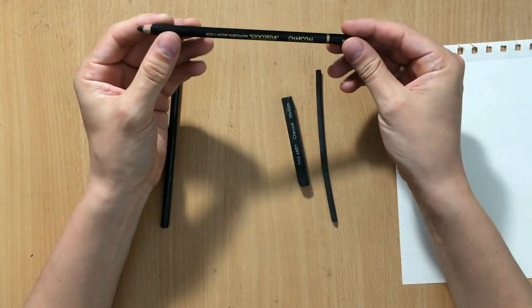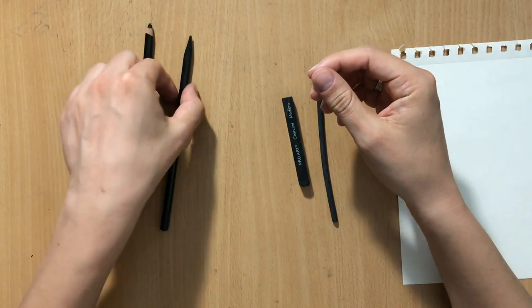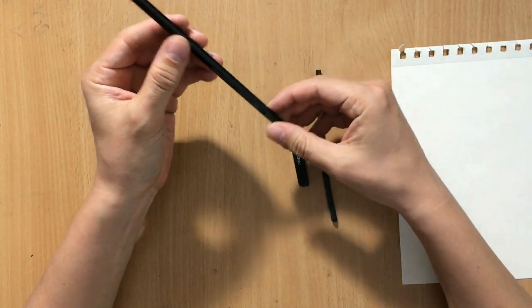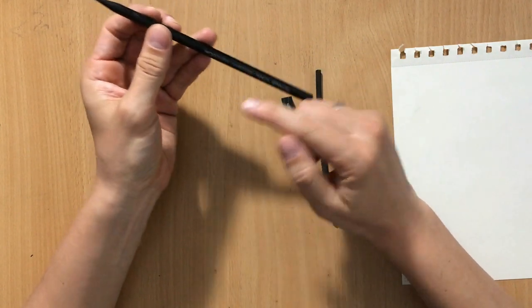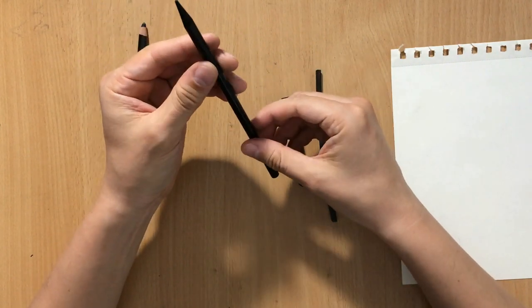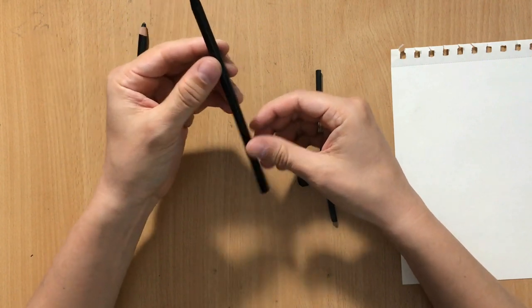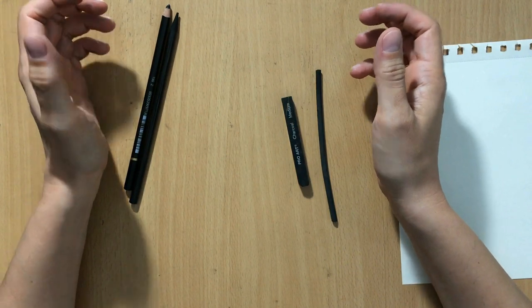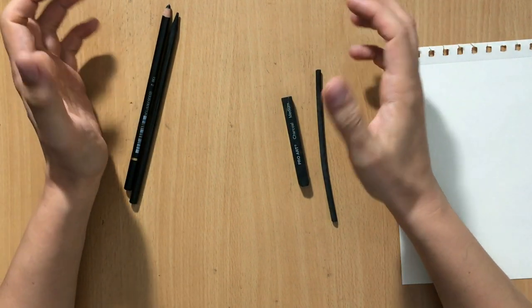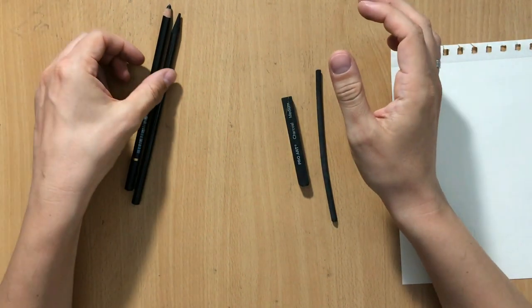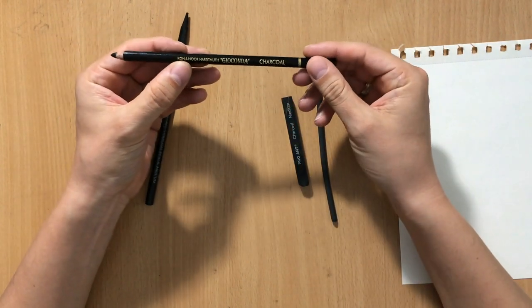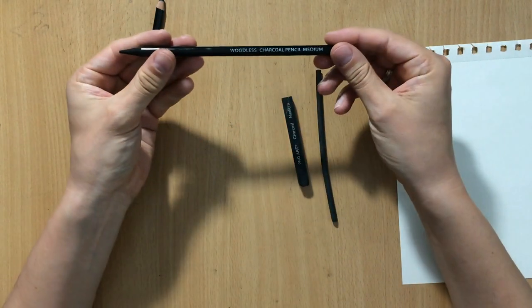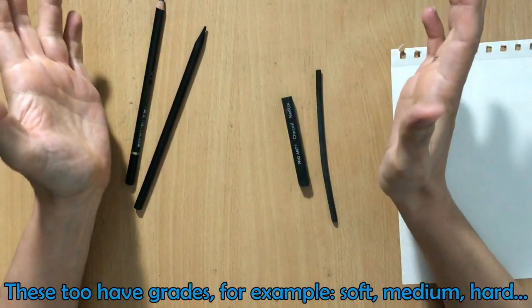In addition to regular charcoal pencils, there are woodless charcoal pencils. These are pretty much all charcoal, surrounded only by a layer of plastic. People often ask about brands, and I keep repeating that brands aren't really that important. If you want to know, this is a Koh-i-Noor or Gioconda charcoal pencil and these are Derwent woodless charcoal pencils, but that's not really important.